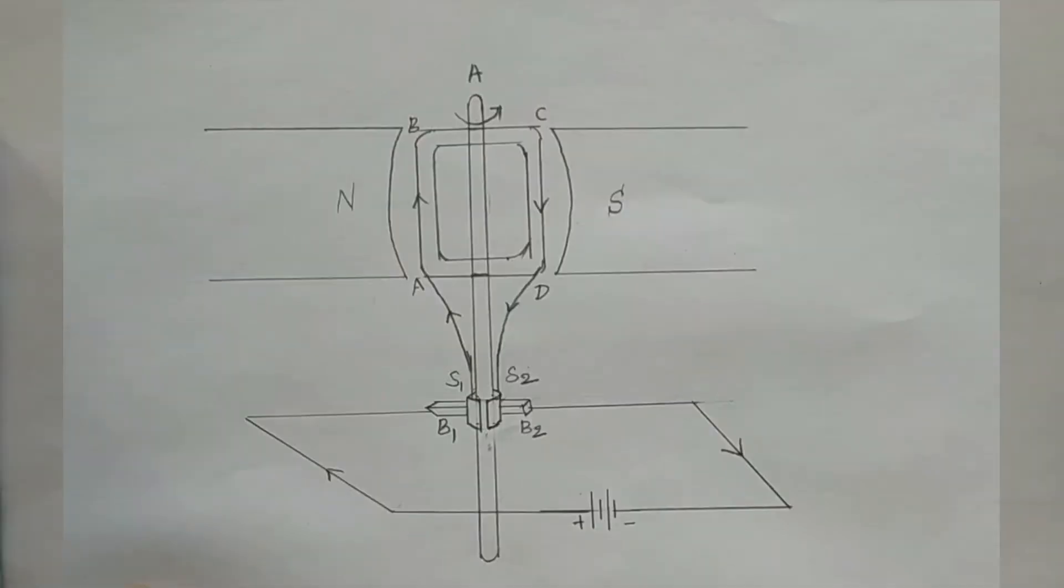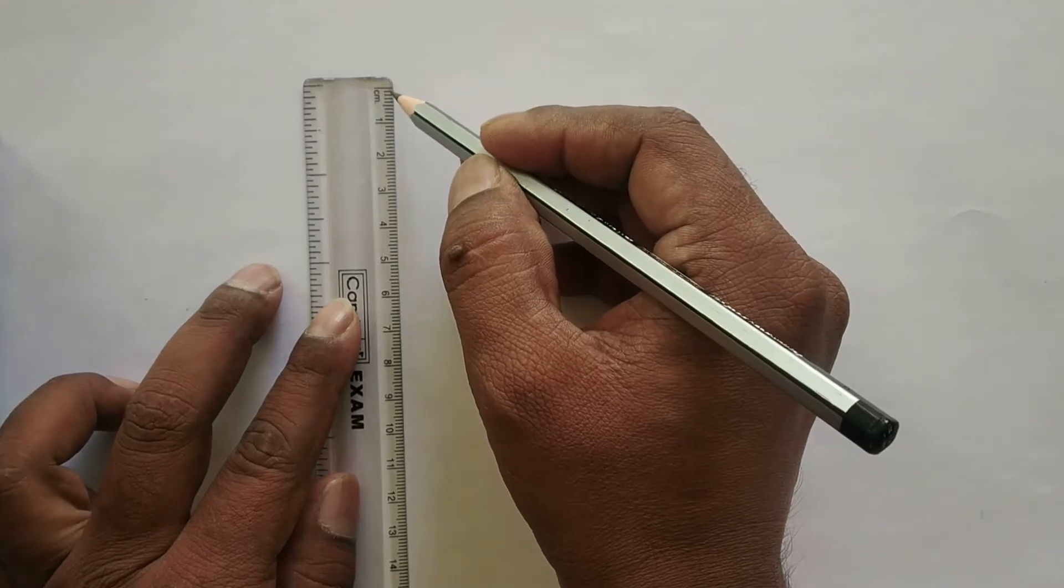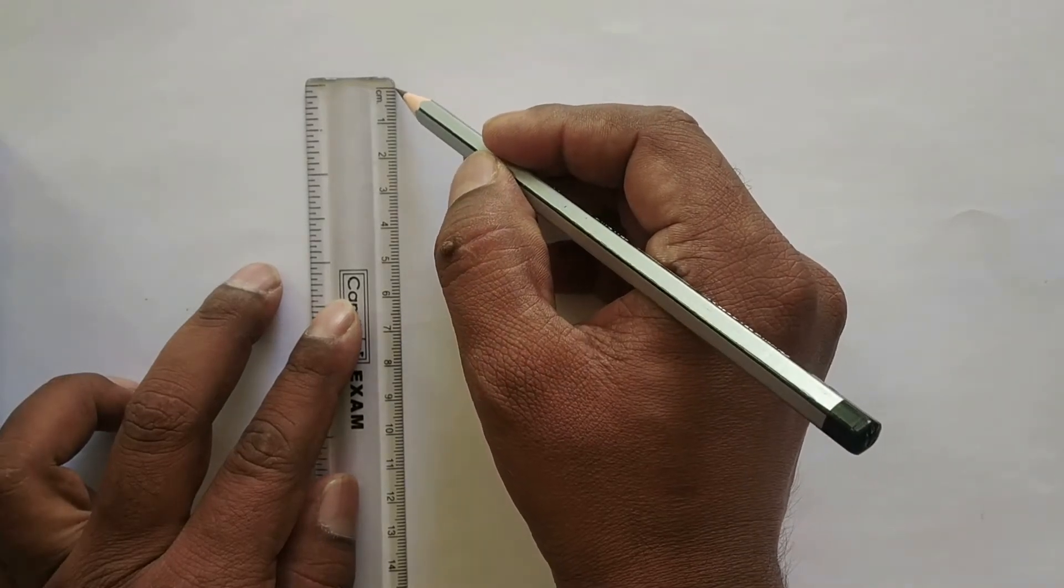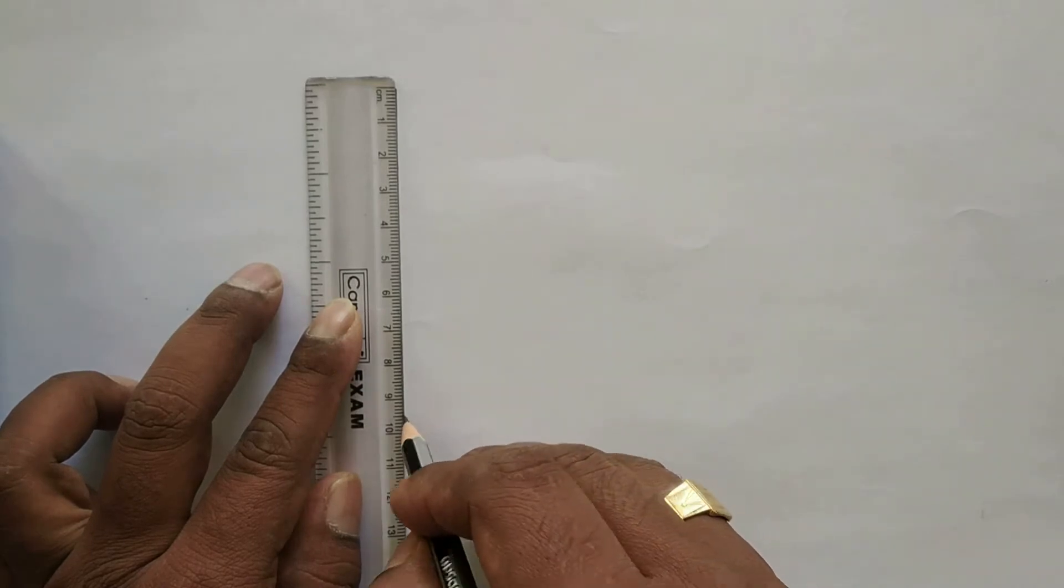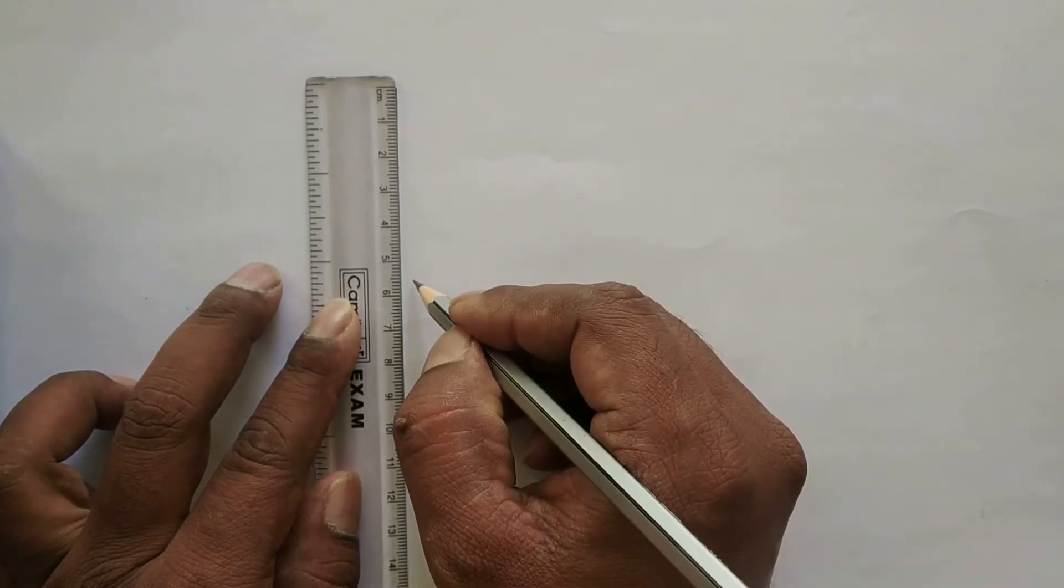Hello children, today I'm going to teach you how to draw a DC motor. Draw a vertical line 9.5 centimeter in length.